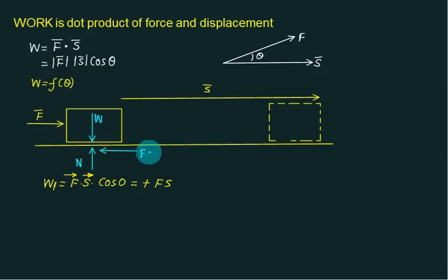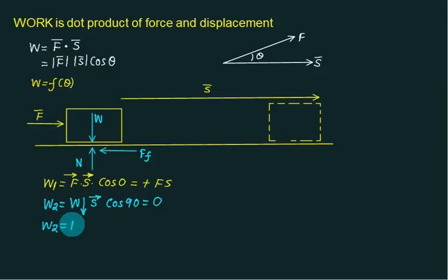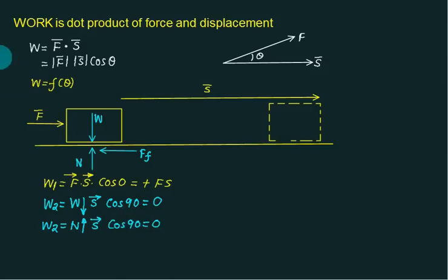Now, to find the work done by weight: weight acts downward and displacement s acts rightward, so the angle between these two vectors is 90°. cos90° = 0, so the work done by weight is zero. Similarly, for normal reaction acting upward and s acting rightward, the angle is again 90°, so the work done by normal reaction is also zero.